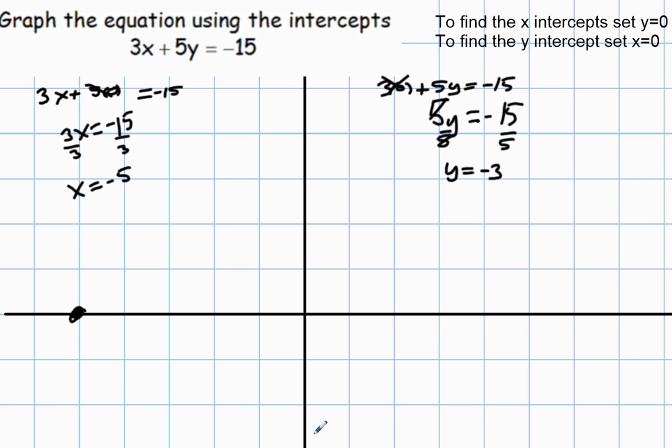So therefore, there's a y-intercept down here at negative 3. And then that makes a line.